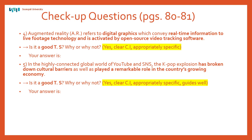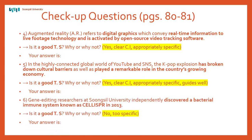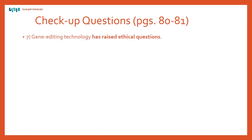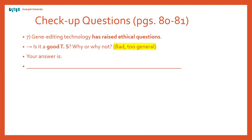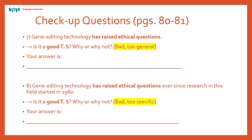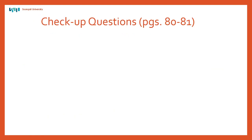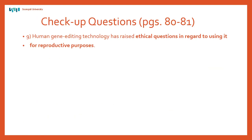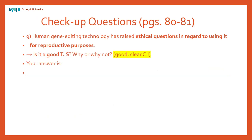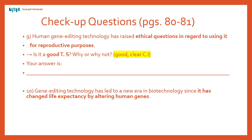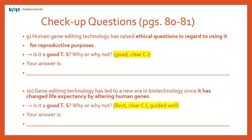Page 81 is the same — you've got three not-good examples and then two at the bottom that are better. Number six: too specific — there's a date, 2013. You don't want a date in the topic sentence. Number seven: too general. Number eight: too specific — there's a date again. Now two better ones. Number nine: 'Human gene editing technology has raised ethical questions in regard to using it for reproductive purposes' — good, clear controlling idea. Number ten: 'Gene editing technology has led to a new era in biotechnology since it has changed life expectancy by altering human genes' — not too specific, gives a controlling idea, a good topic sentence.